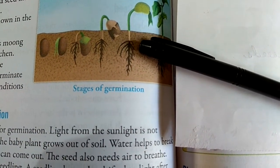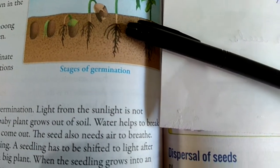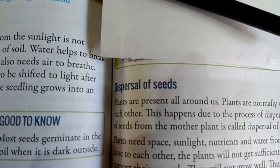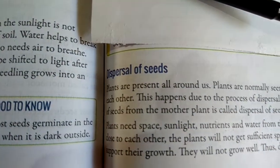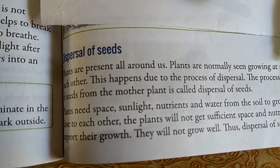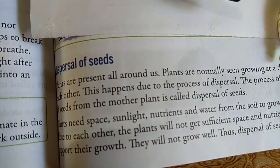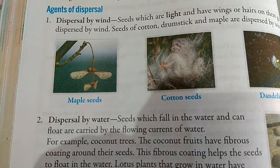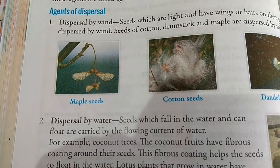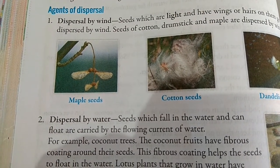Dispersal of seeds occurs with the help of various agents like air, water, animals, explosion, and many more. So now, let us start with the agents of dispersal.